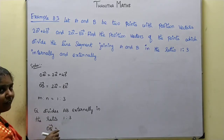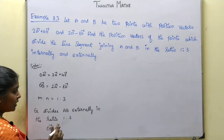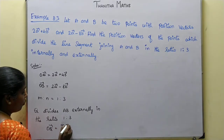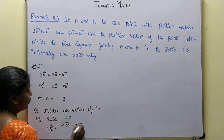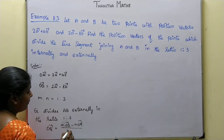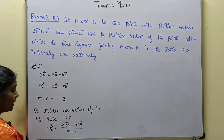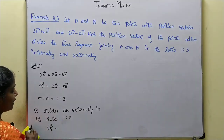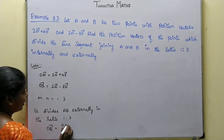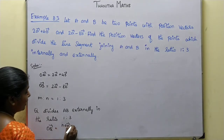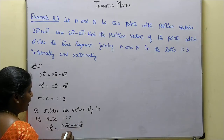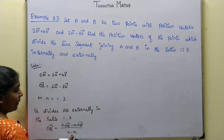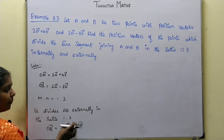Now for external division, we go to OQ vector. The external division formula is: m into OB vector minus n into OA vector, divided by m minus n. Alternatively written as n into OA vector minus m into OB vector, divided by n minus m.